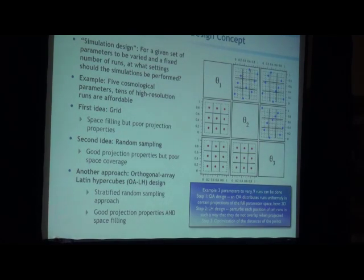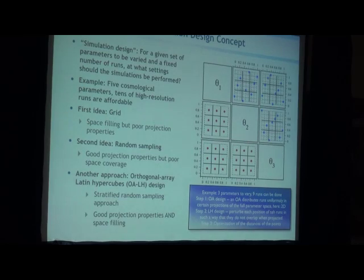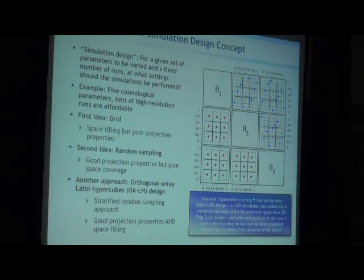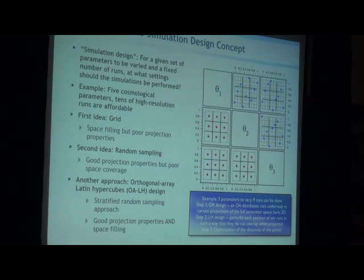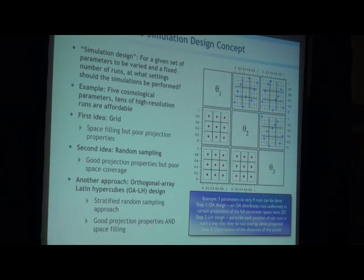The first step is simulation design. You ask: how many parameters do I want to simulate? In the Lambda-CDM model we have six vanilla parameters — that's a good place to start. The number of parameters very much influences how many models you have to simulate. The rule of thumb from statisticians is ten models per parameter, so for Lambda-CDM with six parameters, you need roughly 60 simulations. If you extend that, you need more.